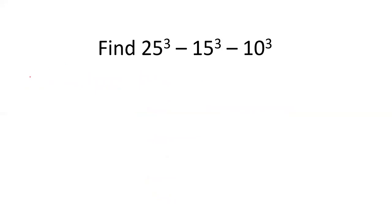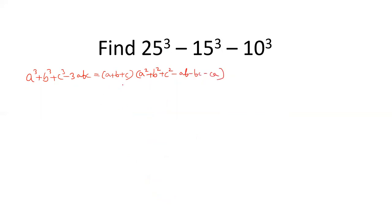There is a formula: a cube plus b cube plus c cube minus 3abc equals (a + b + c) into (a square plus b square plus c square minus ab minus bc minus ca). And if a plus b plus c equals 0, then the left-hand side will be 0, meaning a cube plus b cube plus c cube minus 3abc equals 0.